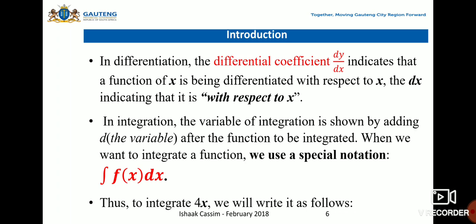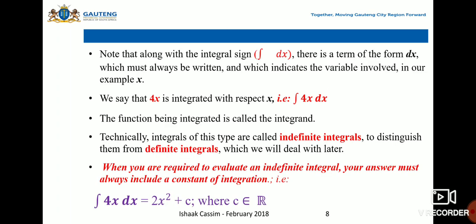In integration, the variable of integration is shown by adding d (the variable) after the function to be integrated. When we integrate a function, we use a special notation: ∫f(x)dx. This notation means the variable of integration is shown by adding d after the variable.